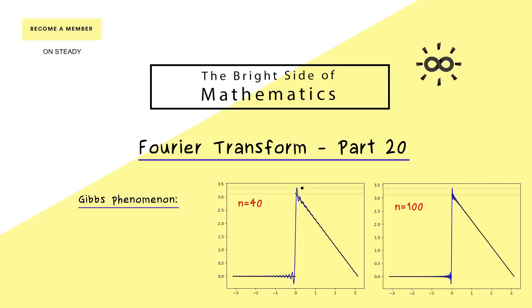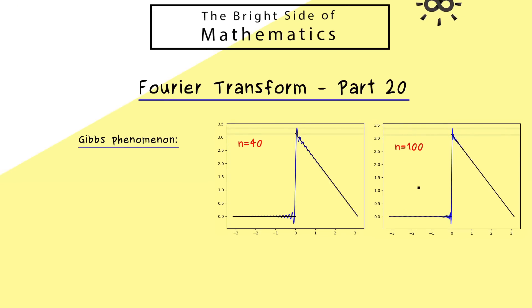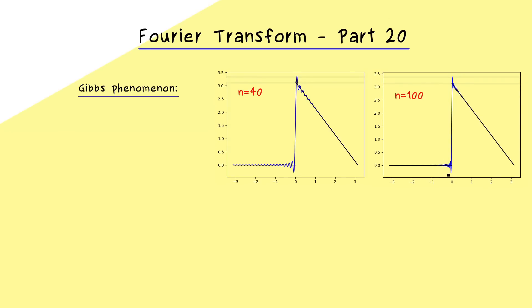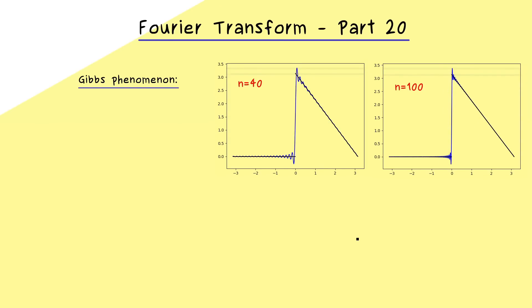And this is what we call Gibbs phenomenon. We always have overshooting no matter how large our n is. And please note, this is not a contradiction to the pointwise convergence we definitely have at all the points around the jump point. Because this overshoot also moves to the left or to the right here. So this means it will only vanish in the limit itself. So you can see it as an interesting mathematical fact. We have this oscillating behavior in the approximation of the Fourier series.